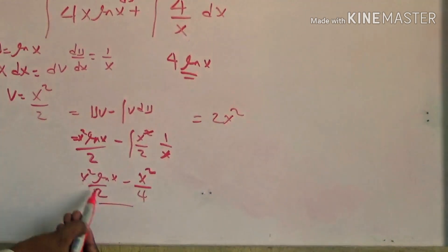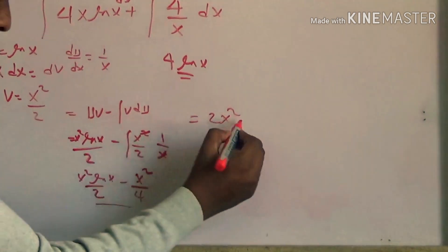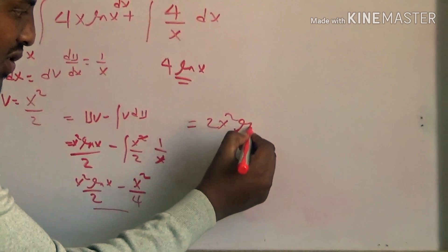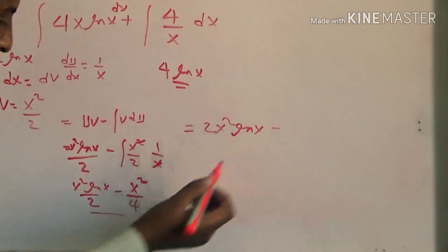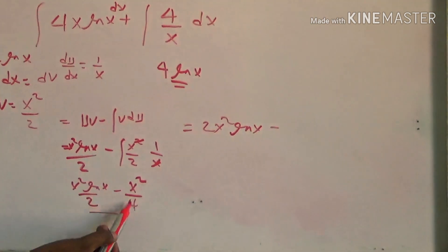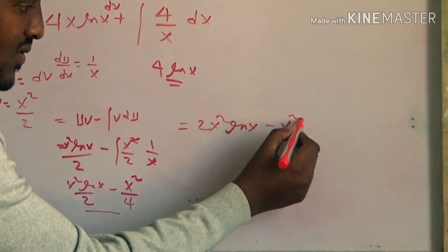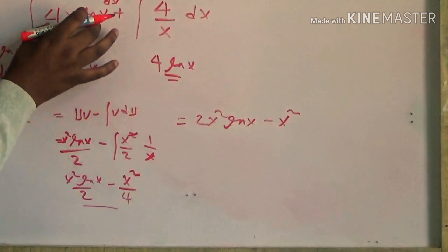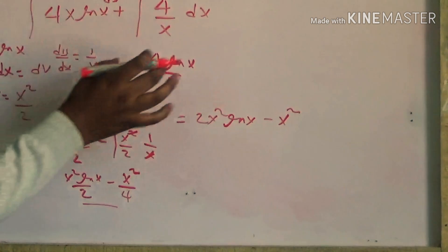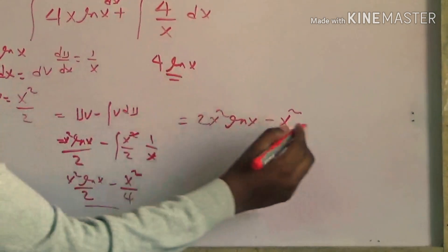Four over two gives two x-squared cosine x. Minus 4 before four — x-squared. This term cancels. The equation gives plus four.